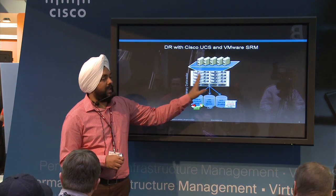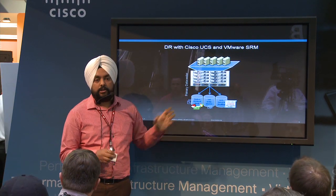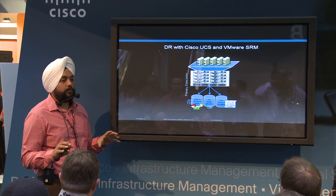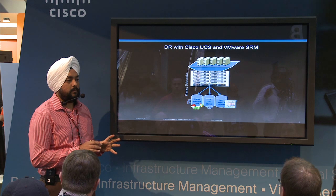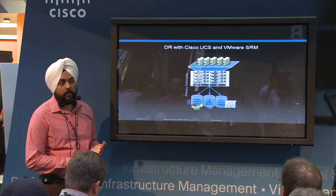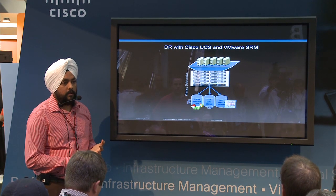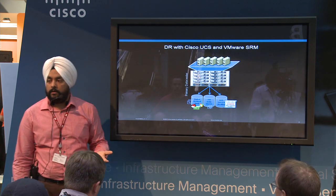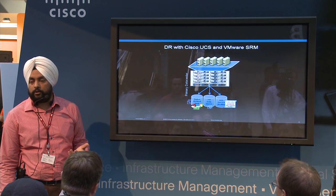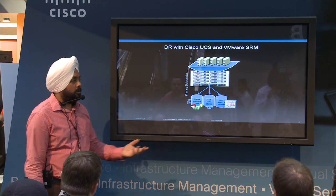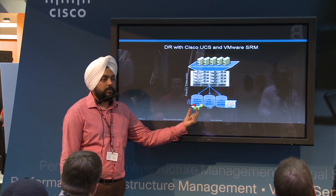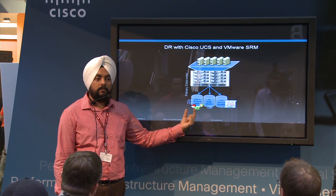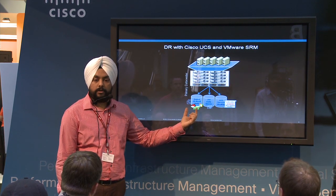Your blade is basically just a compute platform — it's only used for RAM, network, and CPU power. Your local hard drives are probably used for disposable storage like swap space. Your actual OS, which is installed on the blade, is on the SAN storage.